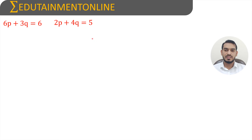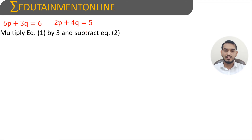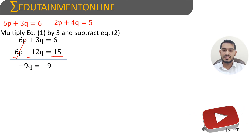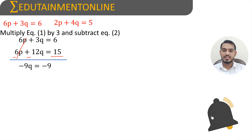To solve using the elimination method, multiply the second equation by 3: 6p plus 12q equals 15. Now subtract equation 1 from this: 6p minus 6p cancels, leaving 3q minus 12q equals 6 minus 15, so minus 9q equals minus 9, therefore q equals 1.